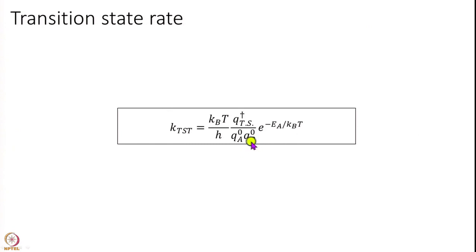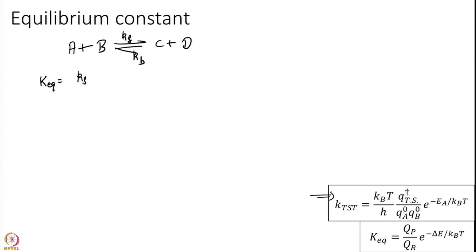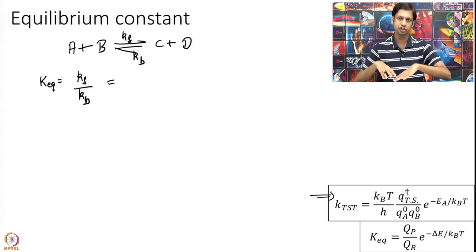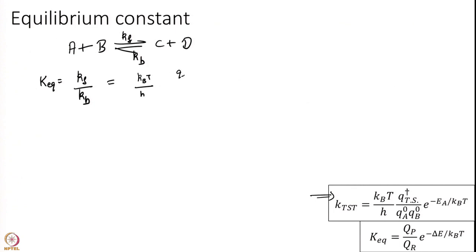Let us start with the first property, which is the equilibrium constant. Transition State Theory is given here. Let us assume I have some reaction that is reversible, and K equilibrium is Kf over Kb. I can calculate Kf and Kb both from Transition State Theory and take the division. So Kf will be equal to KbT over H, times Q of the transition state over Qa0 times Qb0, times e to the power of minus Ea forward over KT.